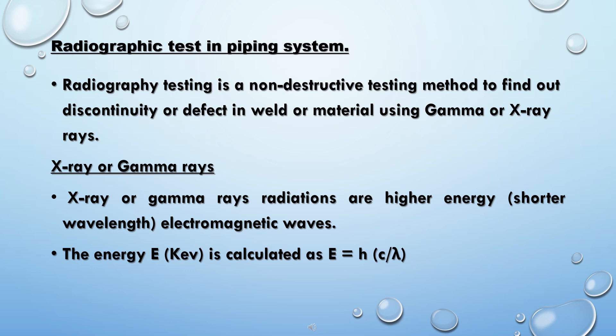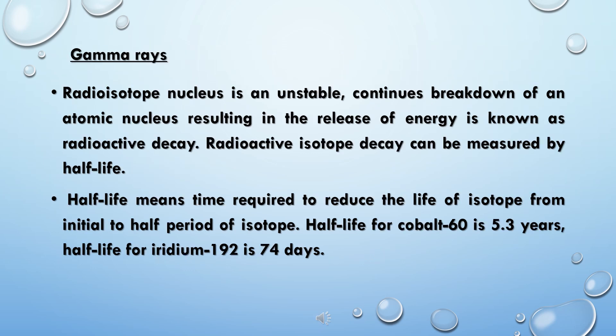Radiographic testing uses X-rays or gamma rays. X-rays and gamma rays are higher energy, shorter wavelength electromagnetic waves. The energy is calculated using the following equation. Gamma rays originate from a radioisotope nucleus — an unstable atomic nucleus that continuously breaks down, releasing energy in a process known as radioactive decay.